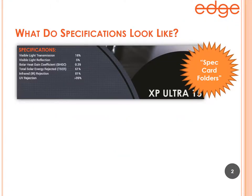You may ask: where can I find window film specifications? The first place you'll find them is on what we call our specification card folders. These are plastic folders with a circular window in the front — they hold a film sample. That packet together gives the customer a visual perspective on the film by having the film inside, as well as a technical perspective by having the specifications written on it.